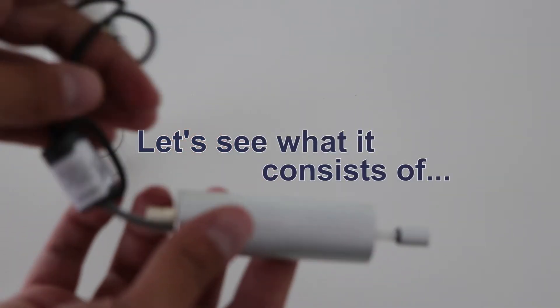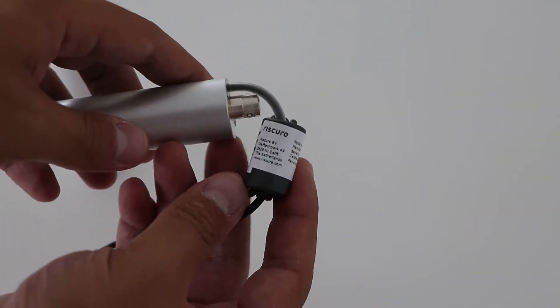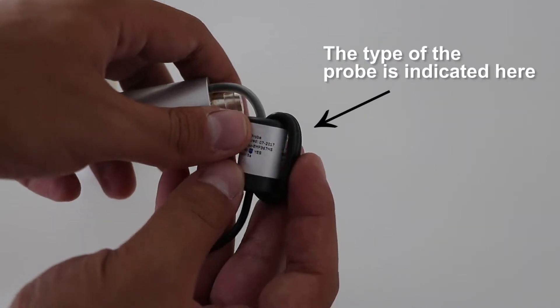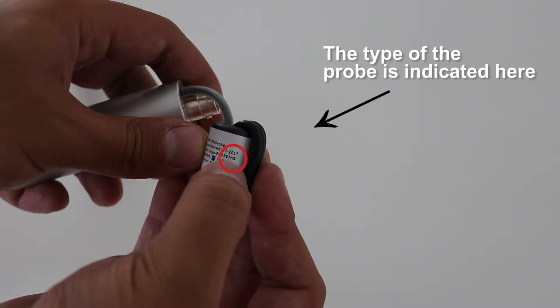Let's see every part of the EM probe. At first, you should notice that the type of the probe and its three-digit serial number are indicated on a sticker at the cylinder of the cable.